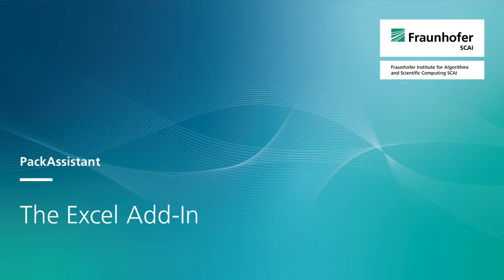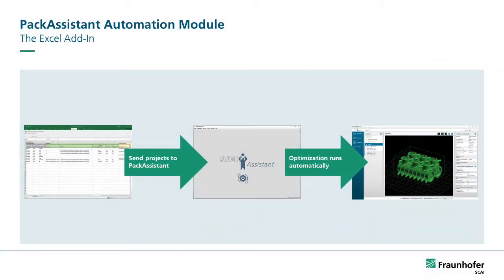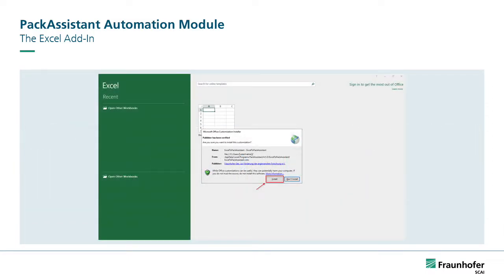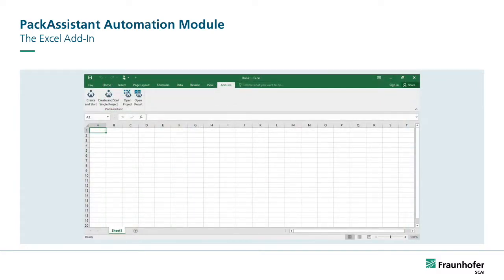The Excel add-in: Part of the new add-on module is an Excel add-in which is automatically installed with Pack Assistant. This allows projects created in Excel to be sent to Pack Assistant and to have the optimization started. To get started, open Microsoft Excel. You will notice a dialogue popping up. If this dialogue does not appear, restart Excel by shutting down all open Excel windows and opening Excel again. Agree to installing the Excel to Pack Assistant add-in by clicking the button labeled Install. Following the installation, a new tab labeled Add-ins will appear in your Excel toolbar. Select it and note that a new section labeled Pack Assistant will appear.